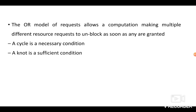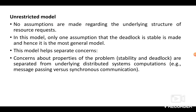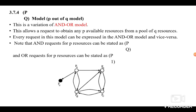The fourth model is the P-out-of-Q Model, which is a variation of the AND Model. Here you must obtain P available resources from a pool of Q resources — that is why it is named the P-out-of-Q Model. Every request can be expressed in AND or OR model terms: an AND request for P resources is stated as P-out-of-Q where P equals Q, and an OR request for P resources is stated as P-out-of-1. Here also, the knot indicates deadlock and a cycle alone does not imply deadlock.